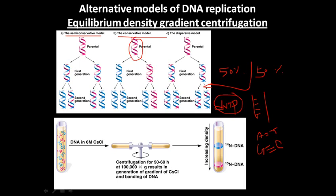In the semi-conservative model, after the first generation you will find 100% a new hybrid type — not any pure parental strand and not any pure new strand, but a hybrid of strands. So if it is conservative, it's 50/50; in the semi-conservative case, we have hybrid strands. If we can separate the old strand from the new strand via some process, we can test our hypothesis. That's exactly what scientists Meselson and Stahl did — they performed an incredibly elegant experiment to separate old and new strands.